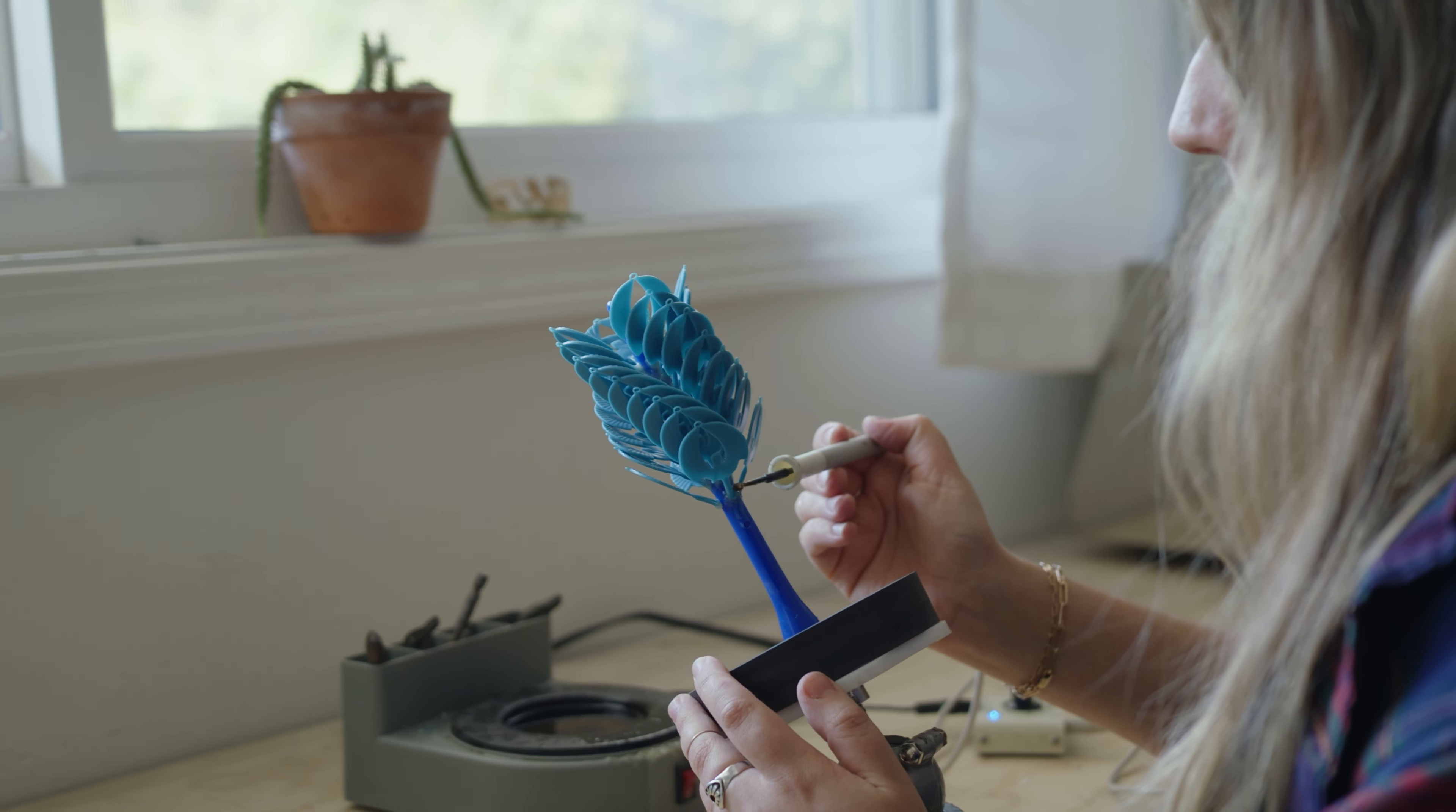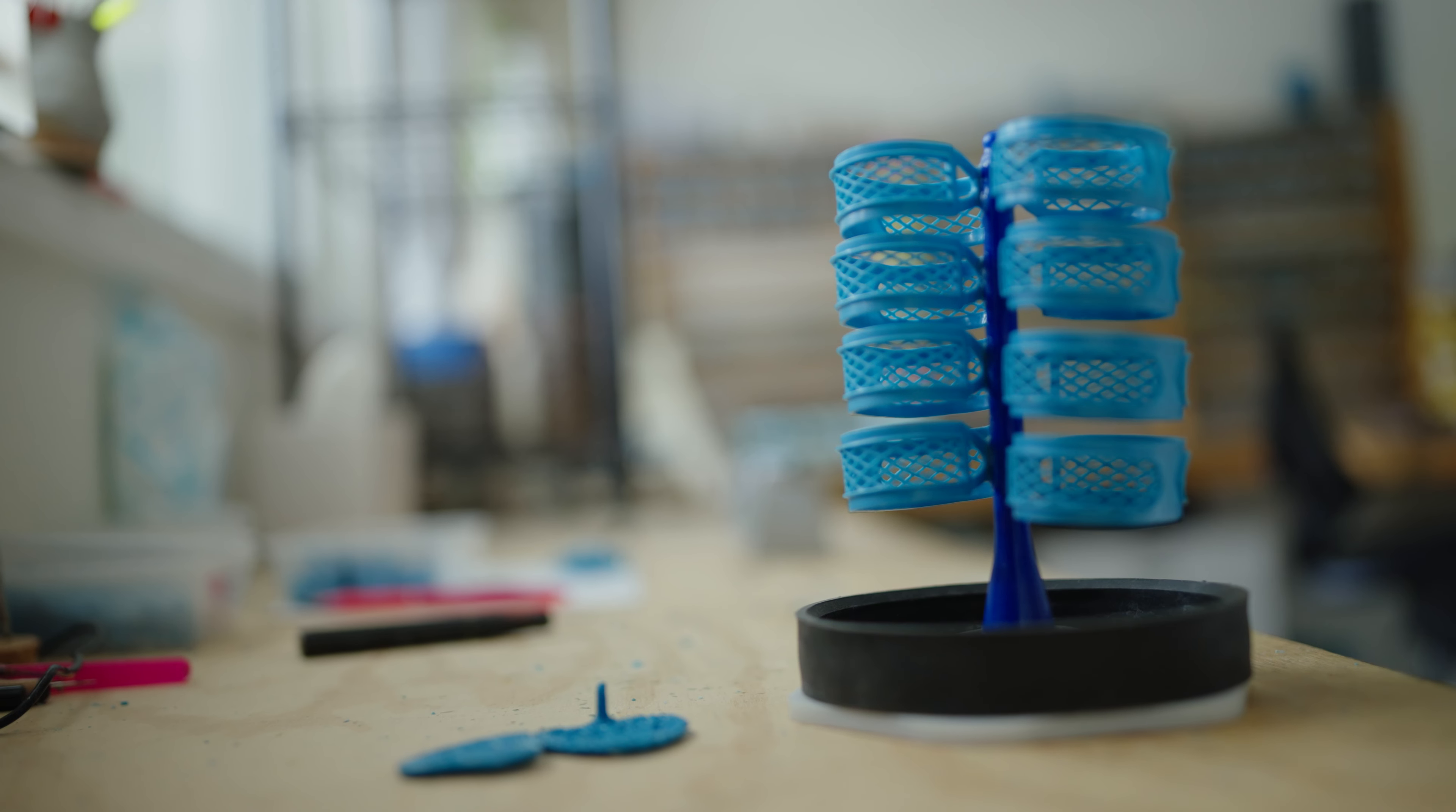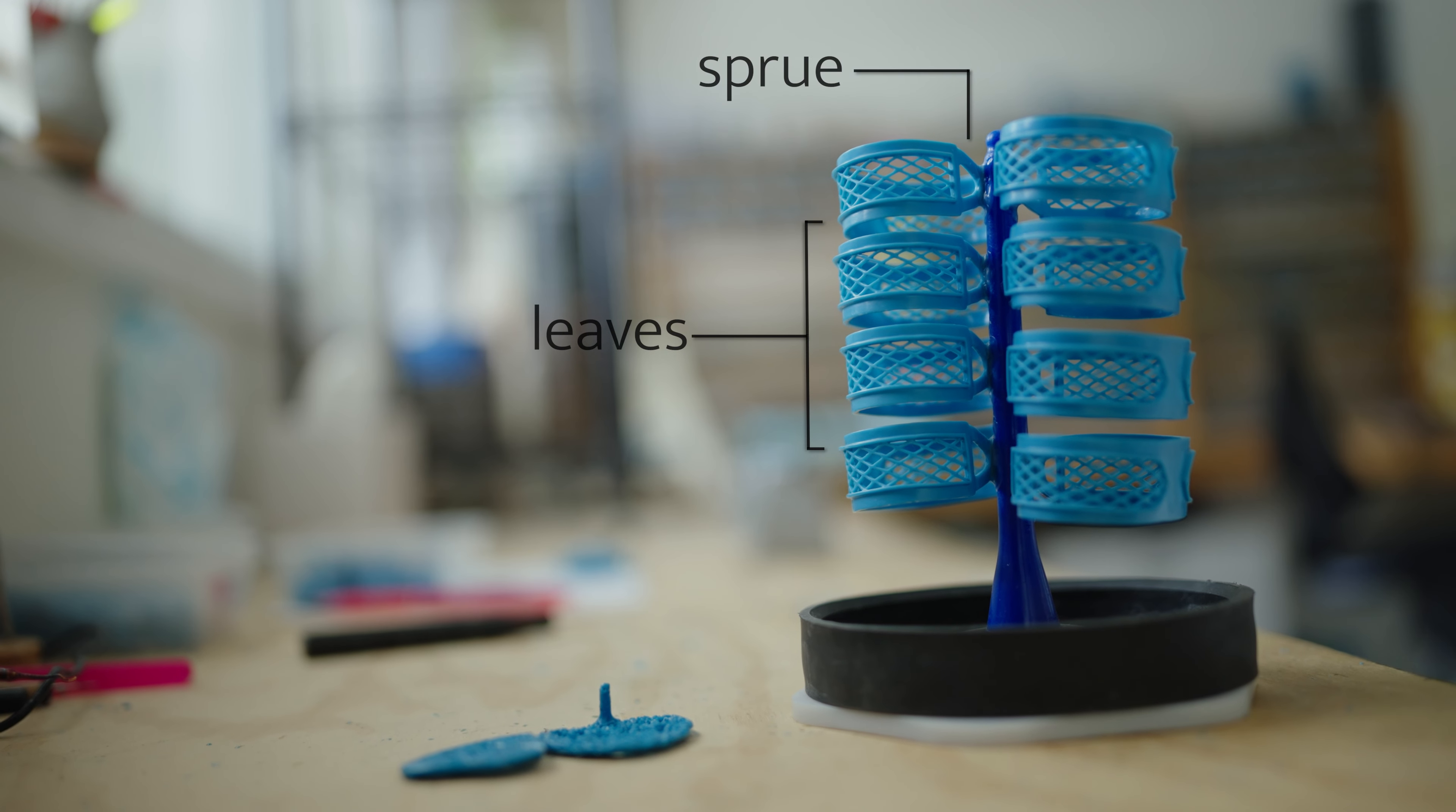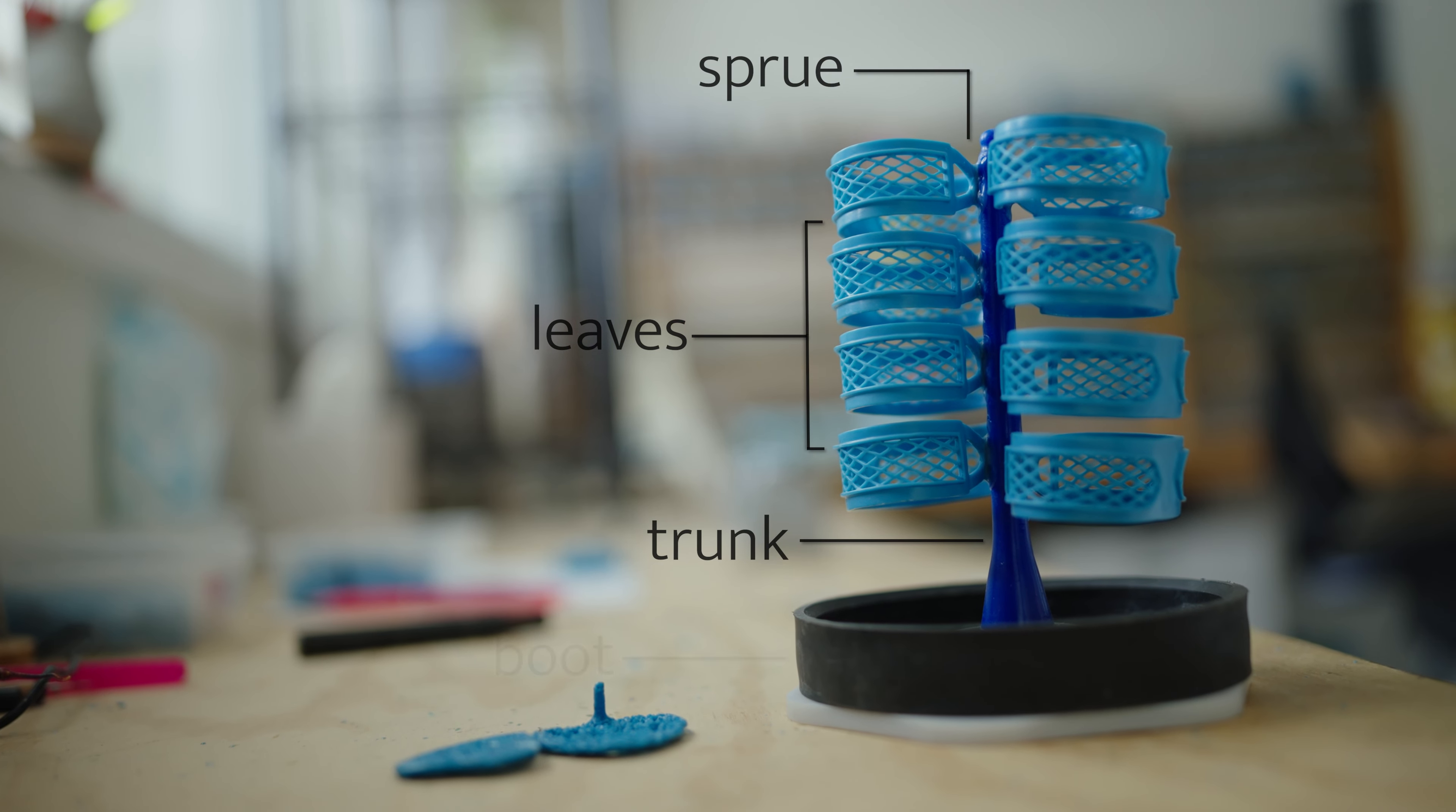several can be attached to a core or sprue to create what looks like a tree. The wax pieces of jewelry are the leaves, the sprue are the branches, all attached to a main core-like trunk that is affixed to a rubber base called a boot.